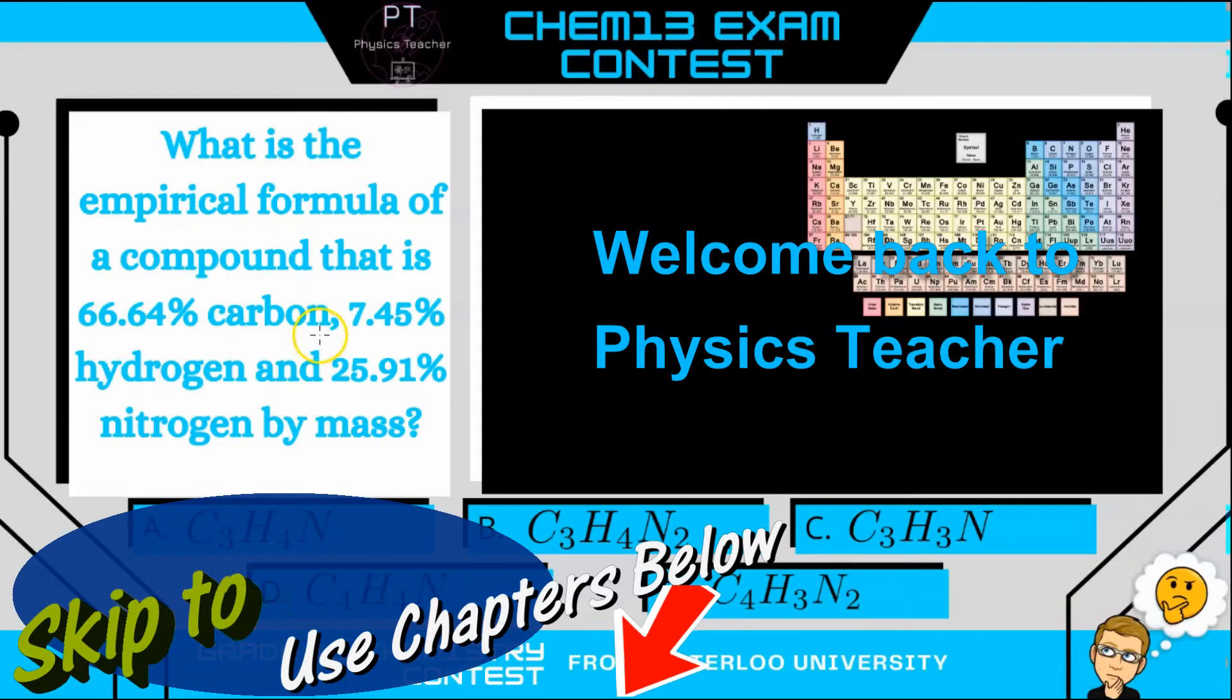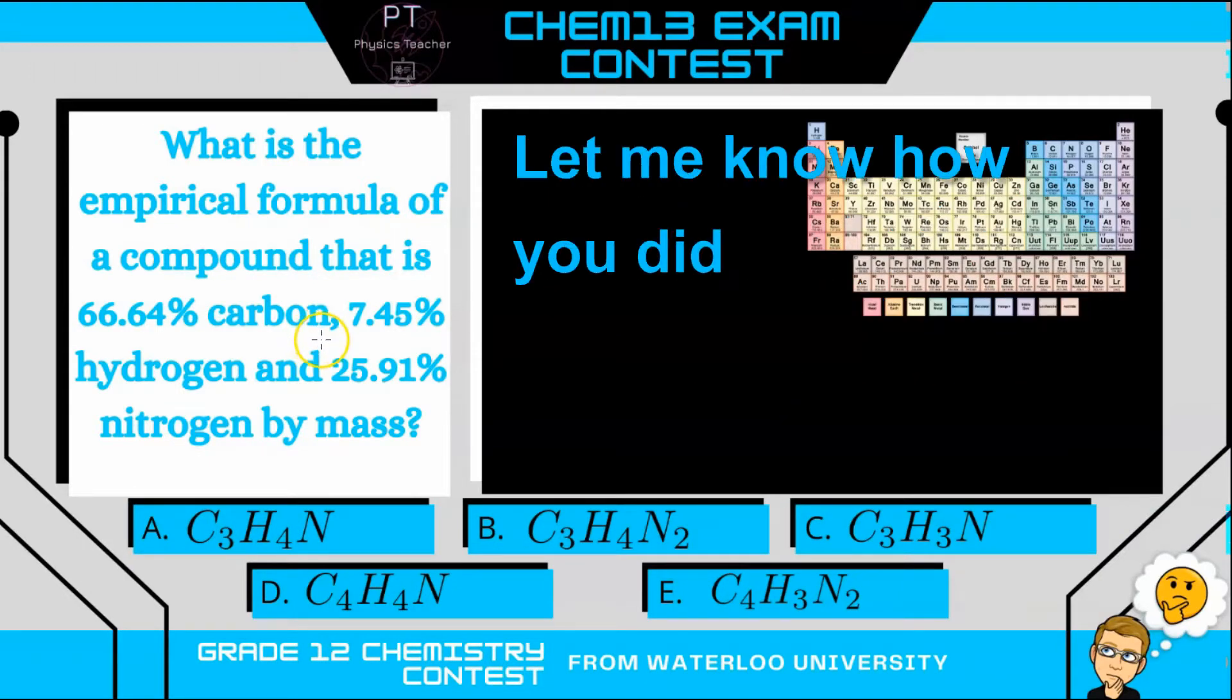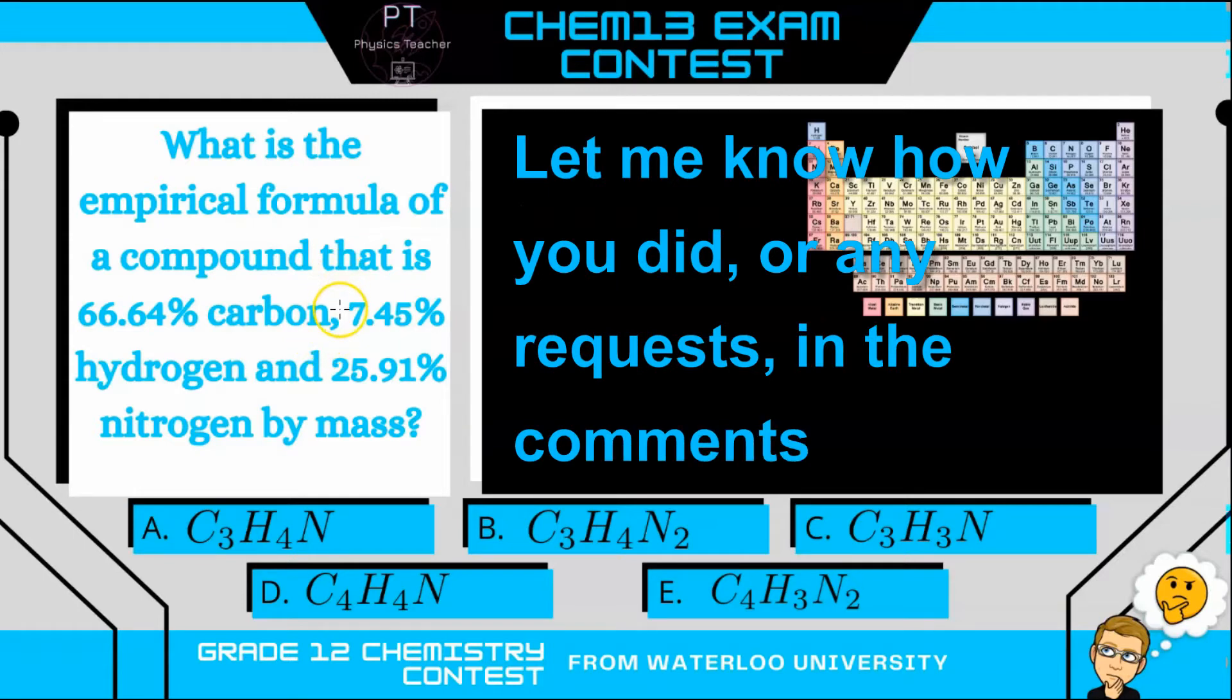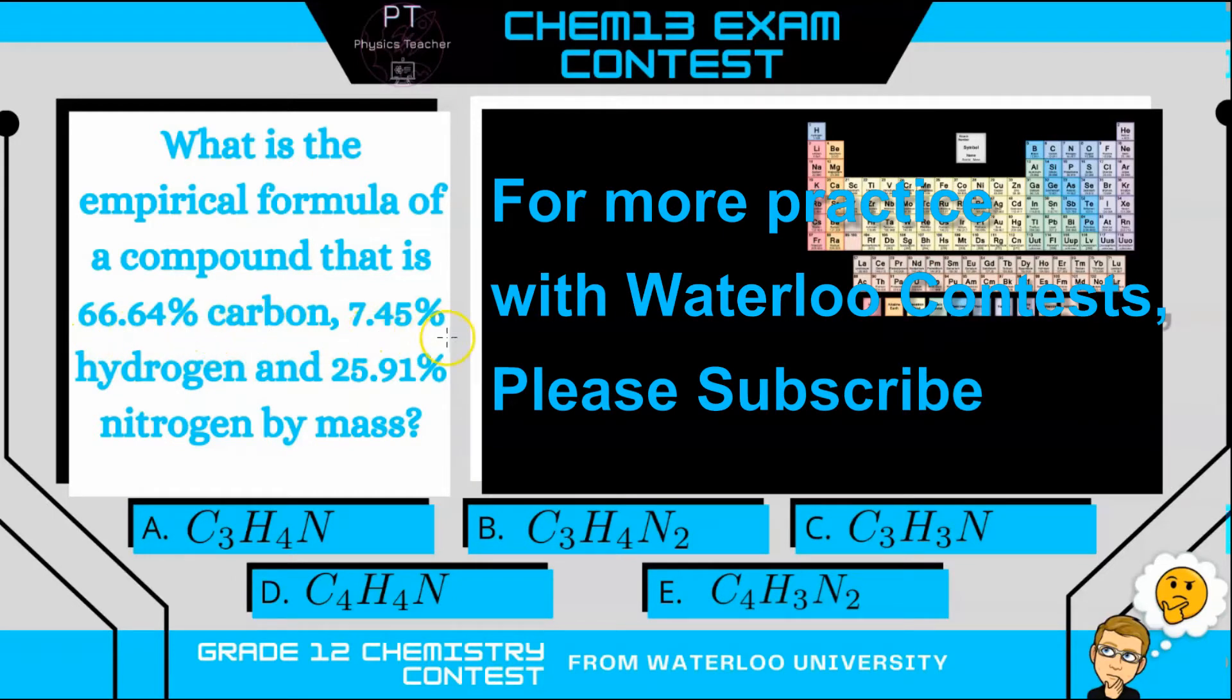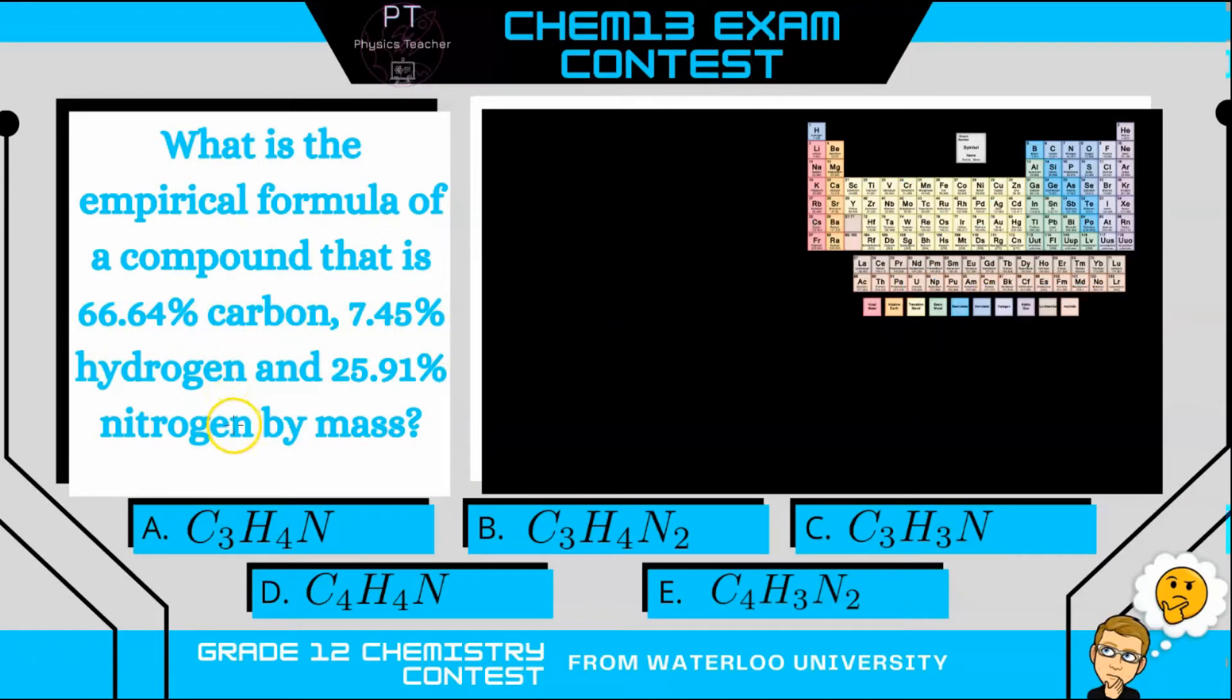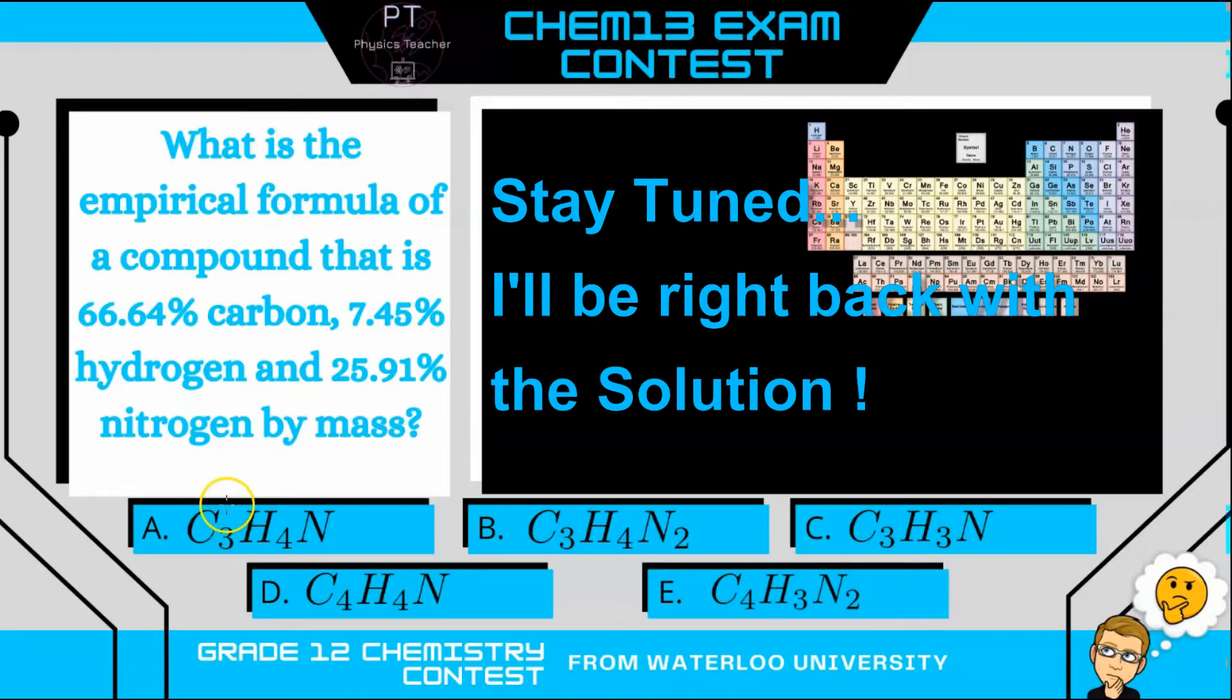Hi, welcome to Physics Teacher, the channel that prepares you for the Waterloo math and science contest. This is a Grade 12 chemistry Chem 13 exam contest question, and it asks for the empirical formula for a compound that has a composition of 66.64% carbon, 7.45% hydrogen, and 25.91% nitrogen by mass. Give it a try, I'll be right back with the solution.